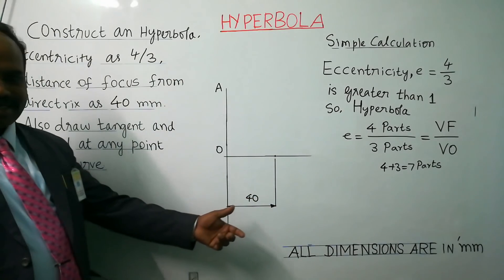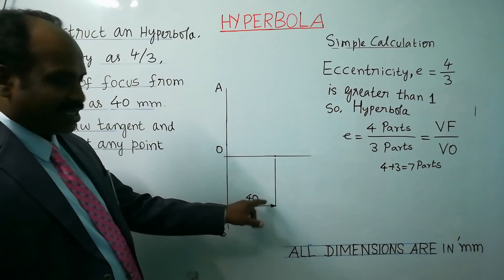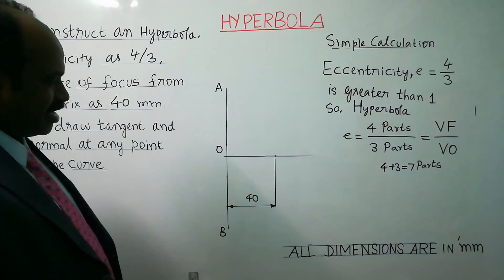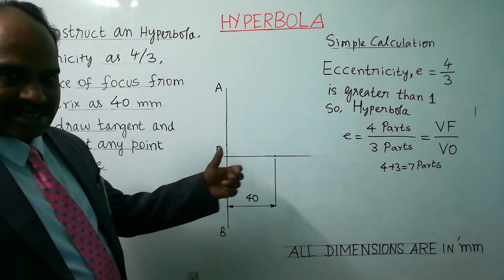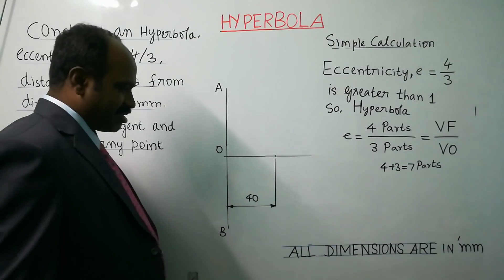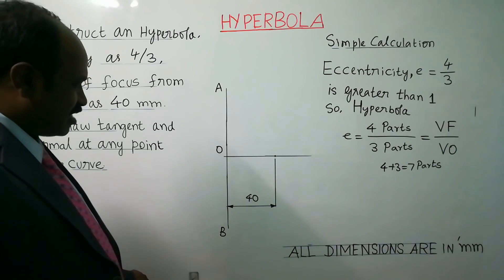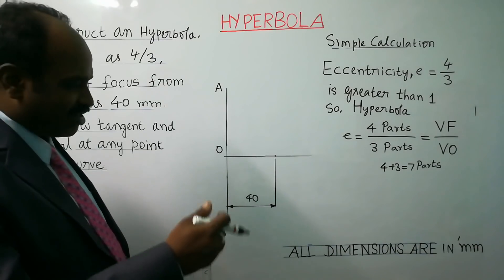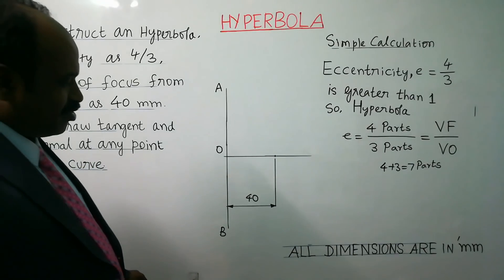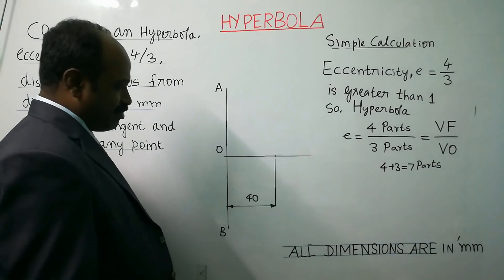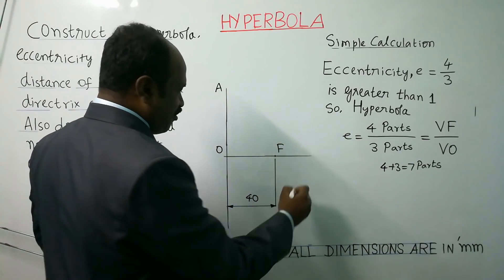Finally, write that all dimensions are in mm — no need to put mm at every place. The dimension represents the length of the line, or size of a circle or square — whatever size is used to calculate the diagram. Those are in terms of mm. This point is called focus; F stands for focus.